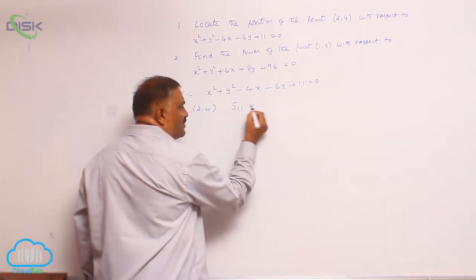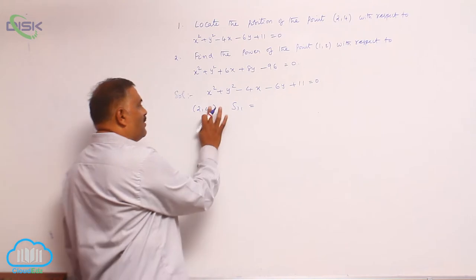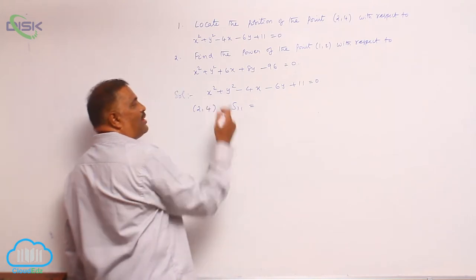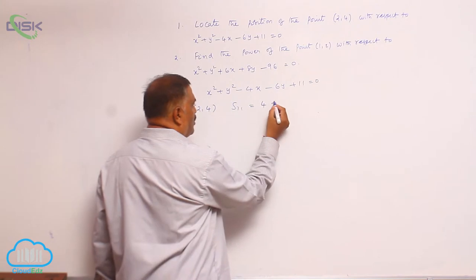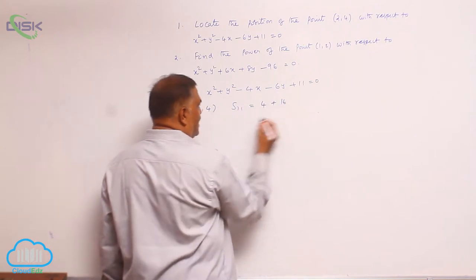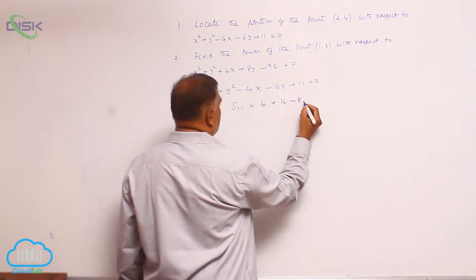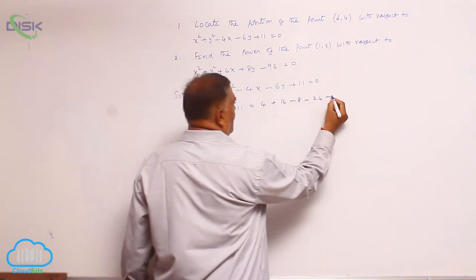We will find out S11. Come on, substitute. Wherever x, y is there, put 2, 4. 2 squared is 4, 4 squared is 16, minus 8, minus 24, plus 11.